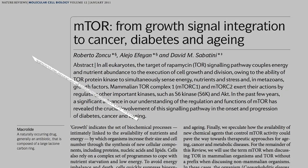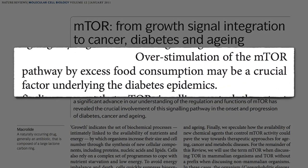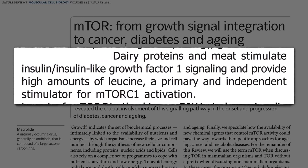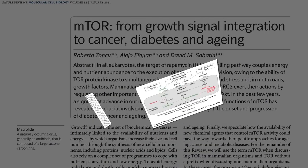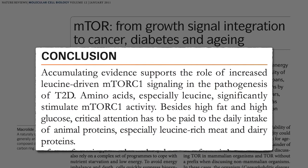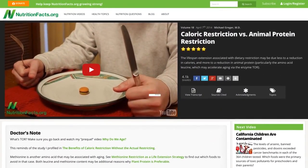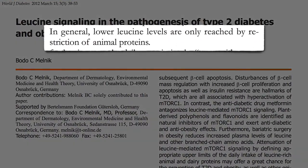Overstimulation of the aging enzyme TOR pathway by excess food consumption may be a crucial factor underlying the diabetes epidemic. But not just any food — animal proteins may not only stimulate the cancer-promoting growth hormone IGF-1, but provide high amounts of leucine, which stimulates TOR activation and appears to burn out the insulin-producing beta cells in the pancreas and contribute to type 2 diabetes. Critical attention has to be paid to the daily intake of animal proteins.